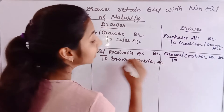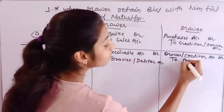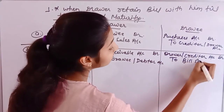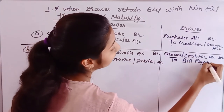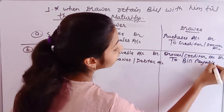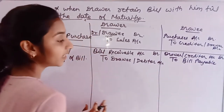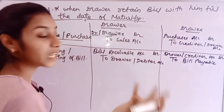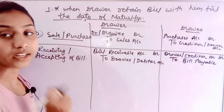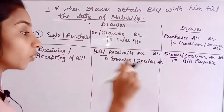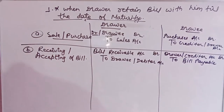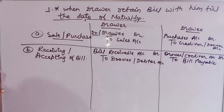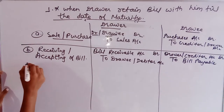You will get your bills payable and your liabilities increase. This is the second journal entry. I hope you understand the second entry. Then the third entry is the payment entry — the maturity date has come and the payment is received.